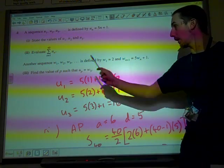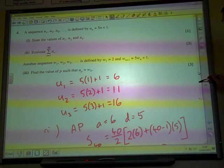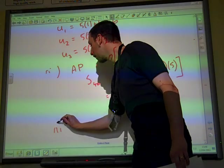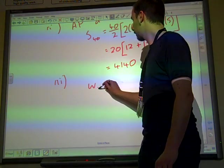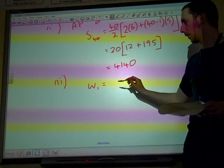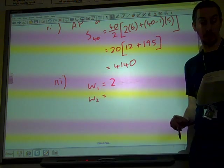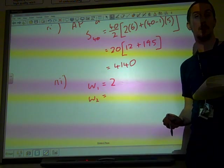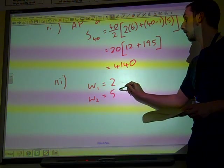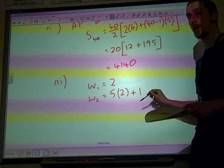And we're supposed to find the value of P such that UP equals W3. We need to find W3 first. So we're told that W1 is 2.